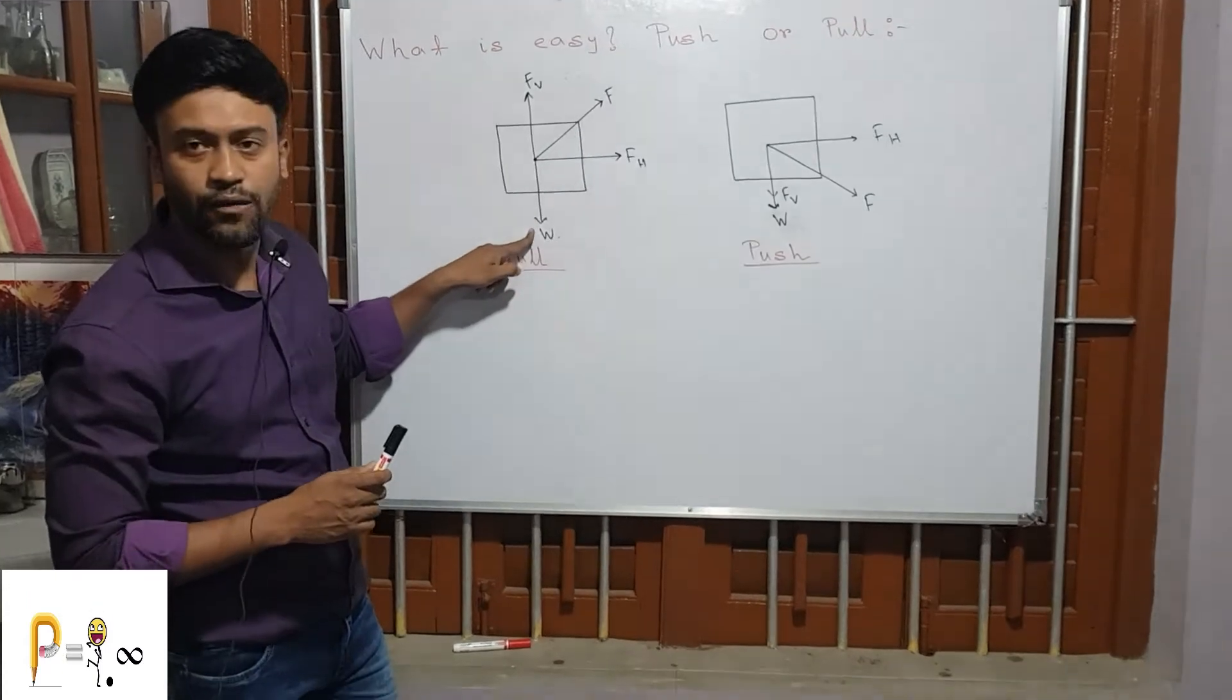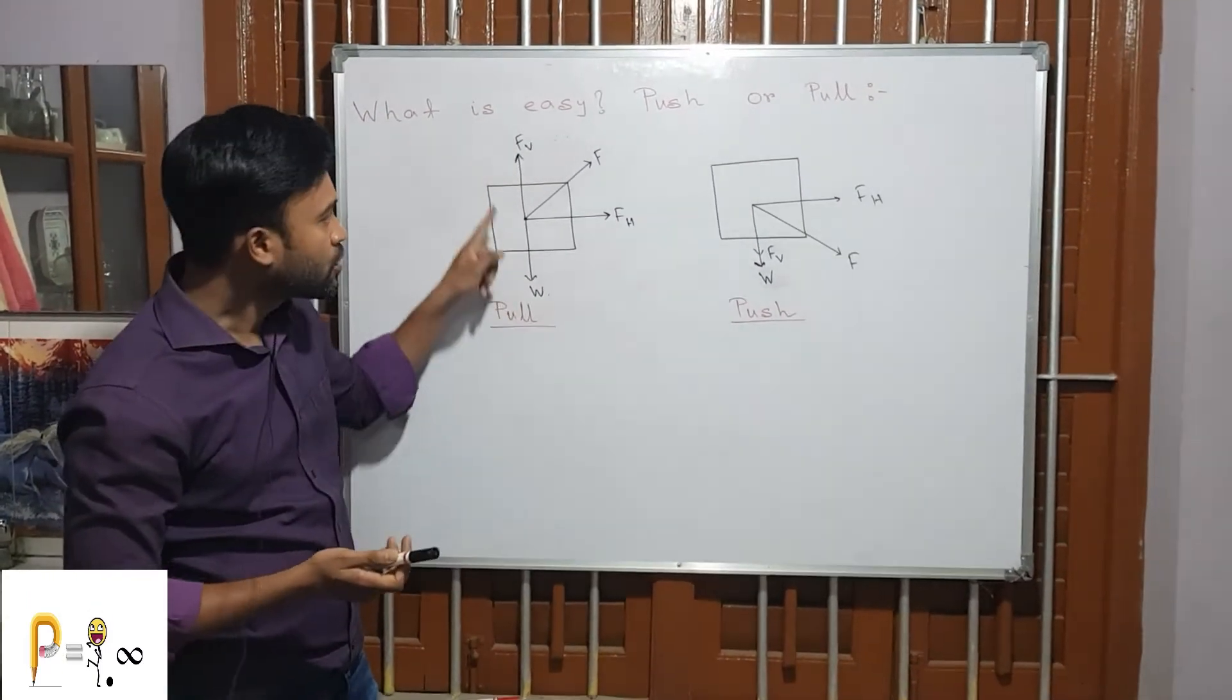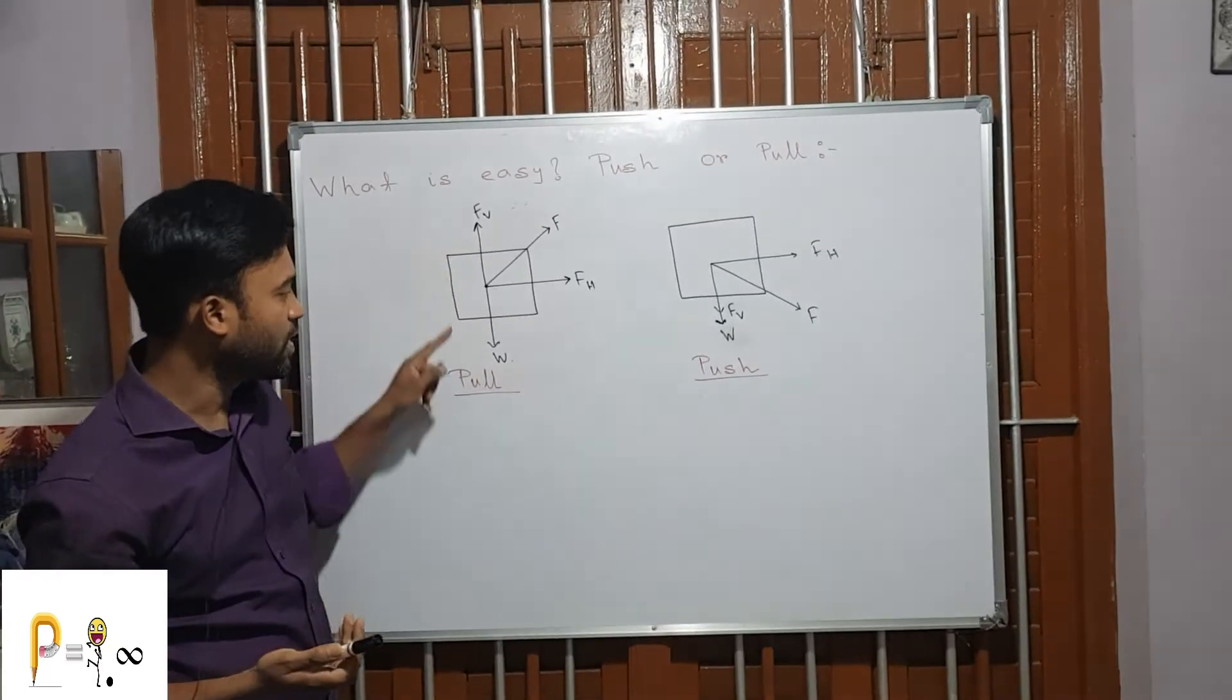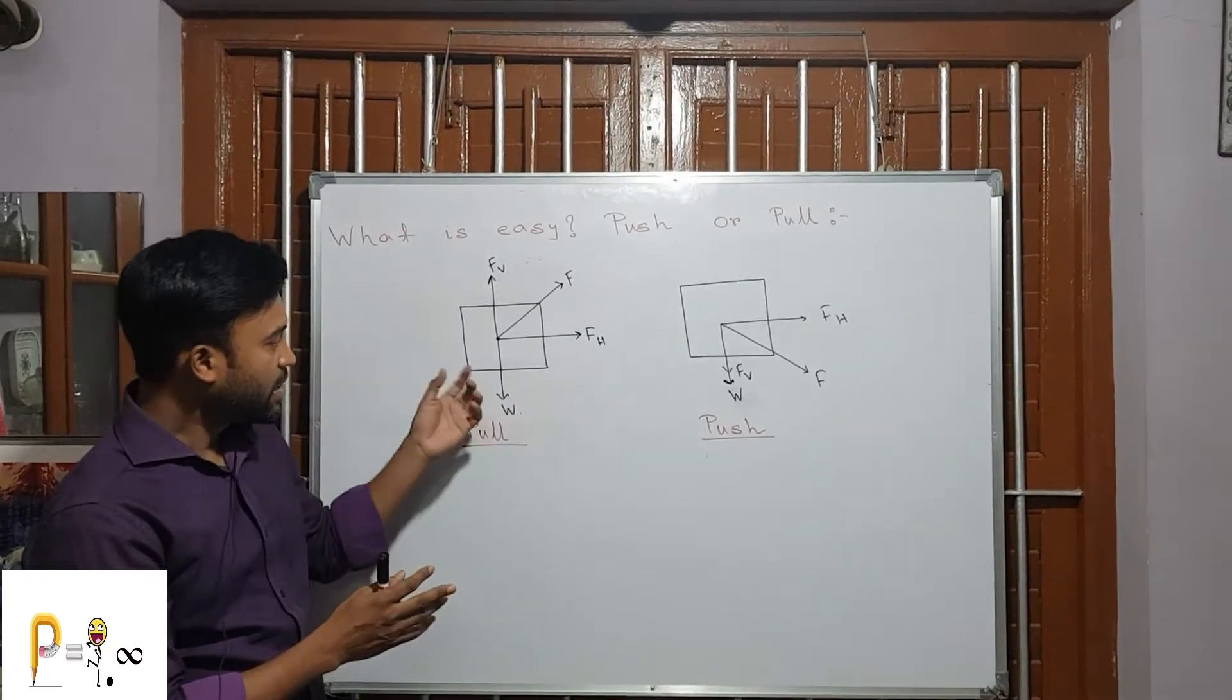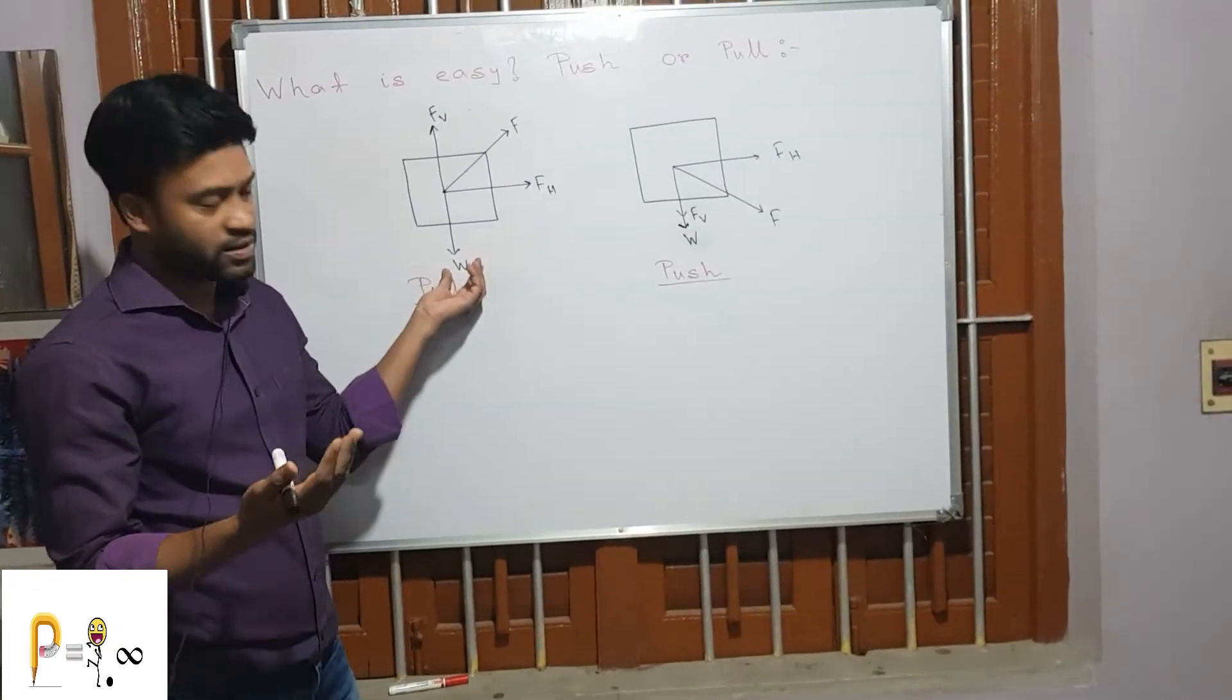As we know that weight always acts downward, so this vertical force is acting in the opposite direction of the weight. Due to this reason, it is subtracting some amount from the weight. So what is happening while pulling? We are feeling the object a bit lighter.